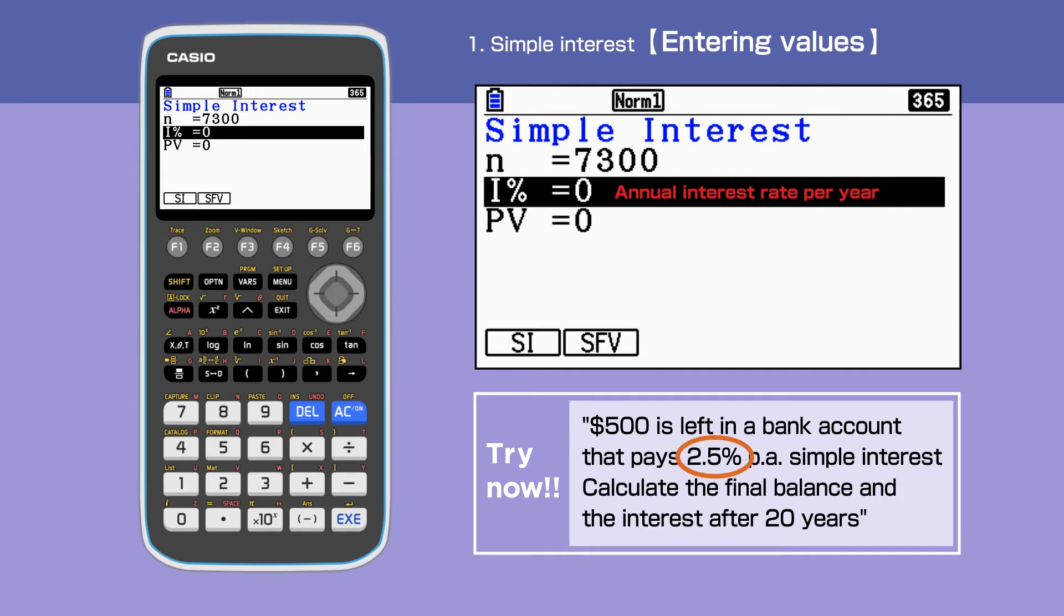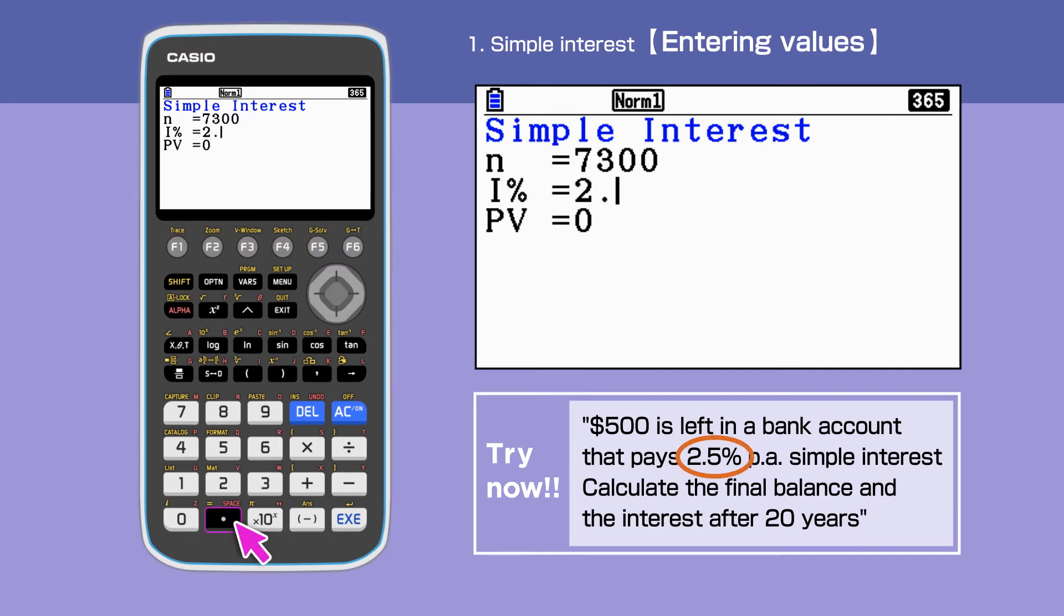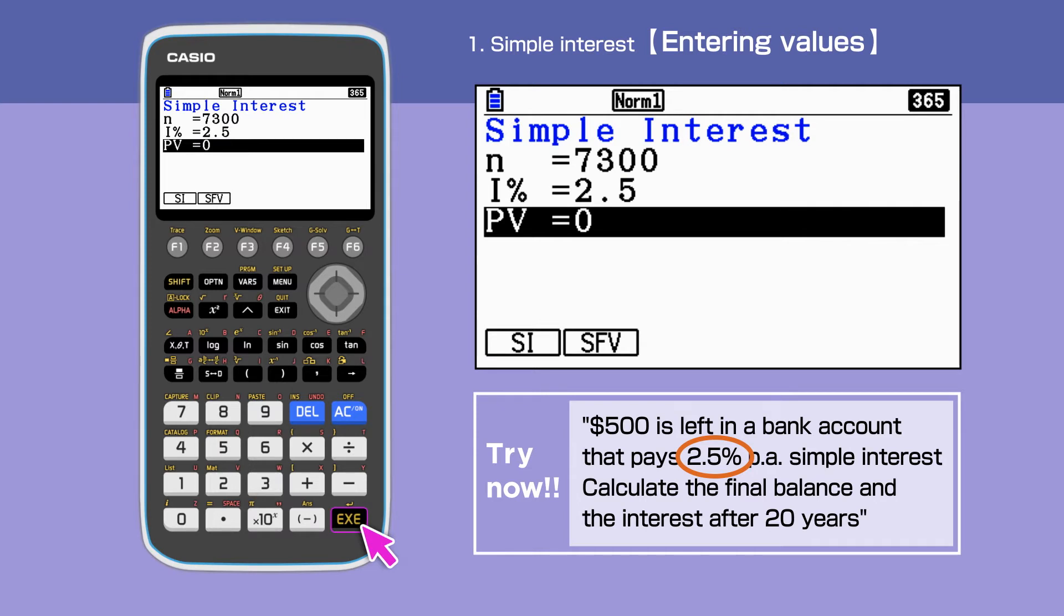For I percent, we enter 2.5. And for PV, present value, enter minus 500.